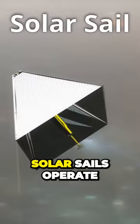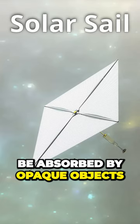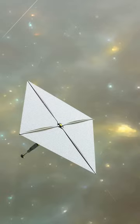Solar sails operate on the principle that photons of light carry momentum which may be absorbed by opaque objects, transferring that momentum, or reflected by reflective objects or mirrors, which can double the imparted momentum,